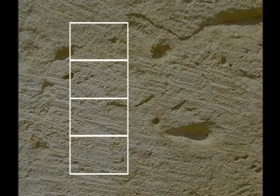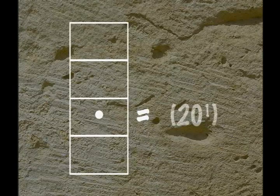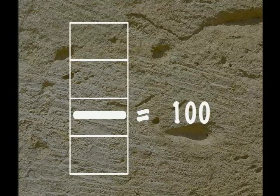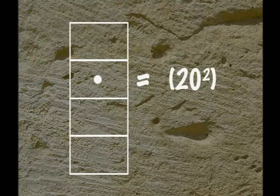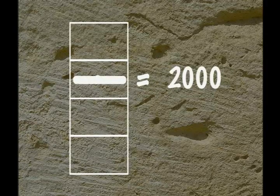So now we can see how place value works in the Maya system. Each dot in the ones place is worth 20 to the zero power, or 1. Each dot in the 20's place is worth 20 to the first power, or 20. And because 5 dots are equal to 1 bar, each bar in that place is worth 5 times 20, or 100. As we move up the place value ladder, one dot is worth 20 times the value of a dot in the lower place value. The value of a dot in the third place is 20 squared, or 400, and a bar in that place is worth 5 times 400, or 2000.